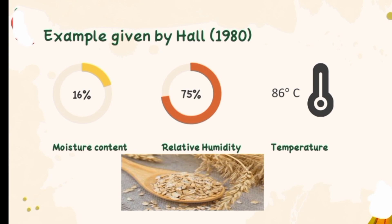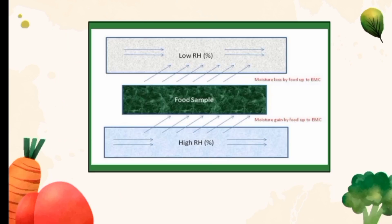Therefore, wheat will gain moisture from air as the vapor pressure of air is more than that of wheat. At the same time, oat will lose moisture as its vapor pressure is higher than air. There is always a tendency of movement of moisture from higher vapor pressure to lower vapor pressure. The figure shows the movement of moisture from and to food.